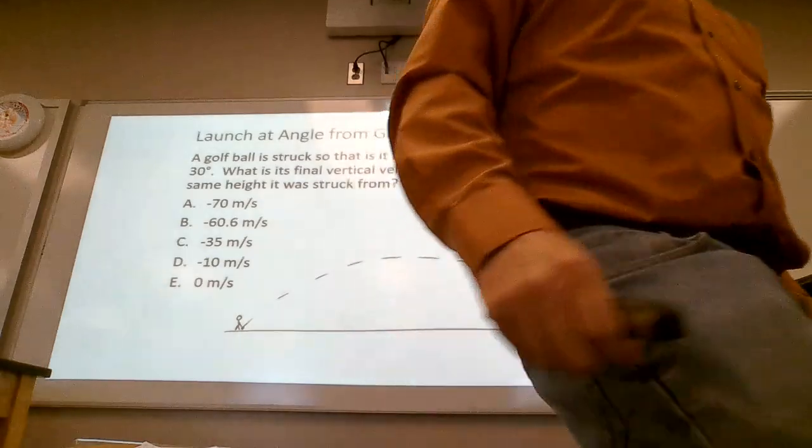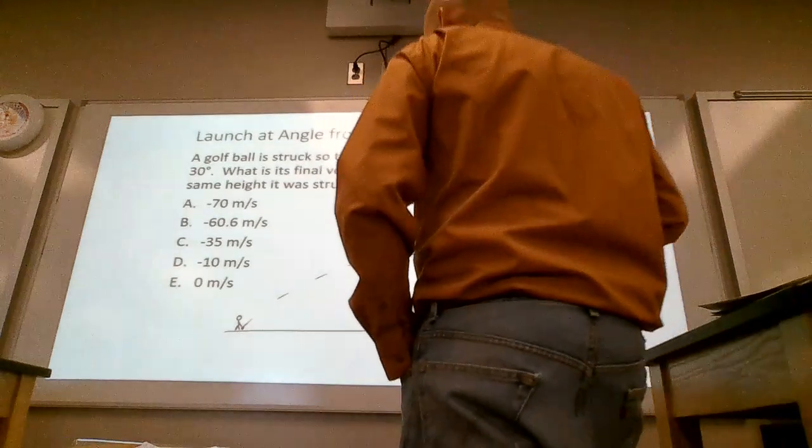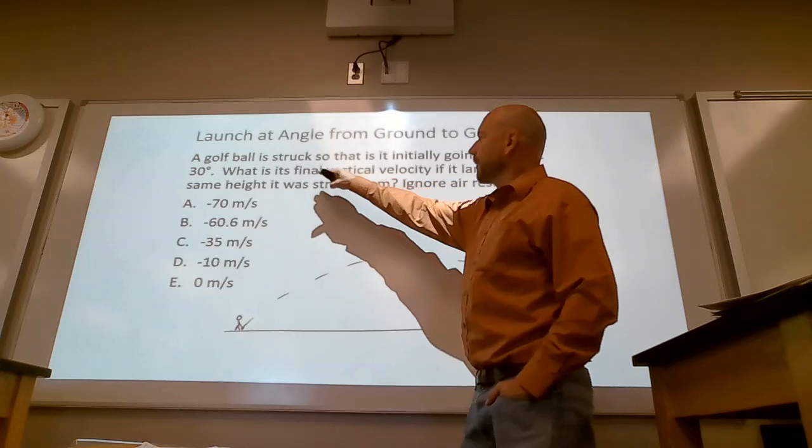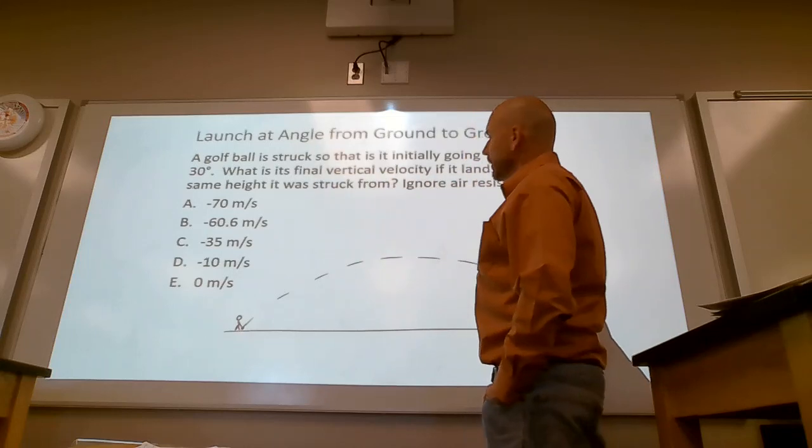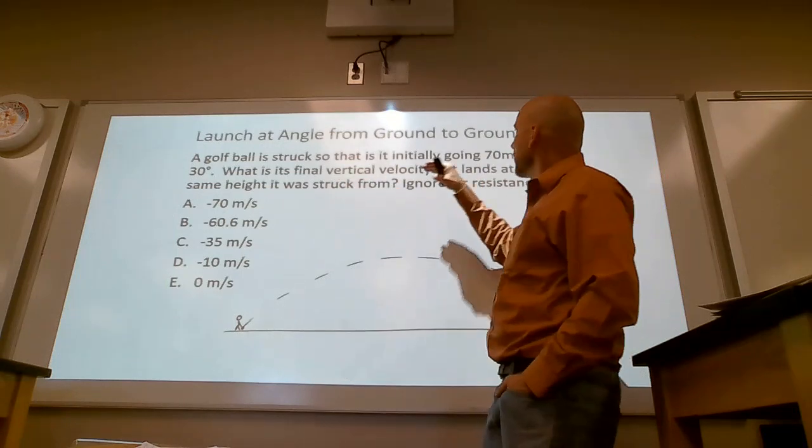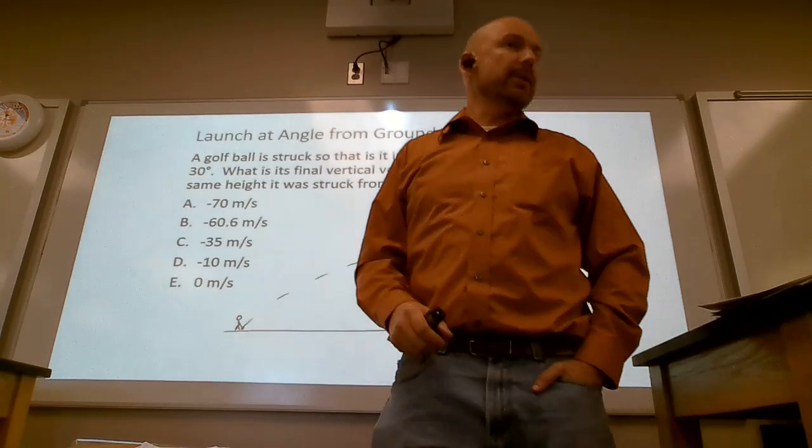Read that question. Pause. The correct answer is negative 35 meters a second. You're looking for the final vertical velocity. So you need to do the vertical component. So you're going to have a sine of 30 times 70 meters a second. It ends up being 35 meters a second.